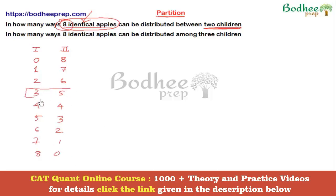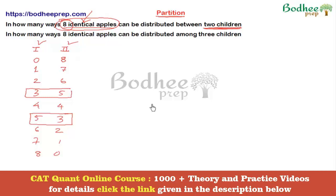An important thing to note is that three-five and five-three are two different distributions because the children are different. So the first child getting three apples and the second getting five is different from the first getting five and the second getting three. Order is very important here. Listing all possibilities, there is no further possibility of distribution. Counting from zero to eight gives nine total possibilities, so the answer is nine.